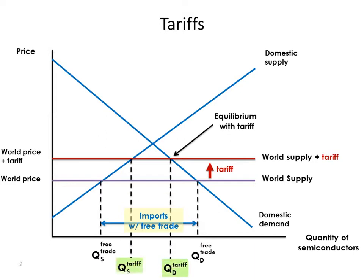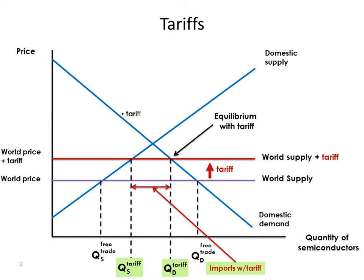If we now add on a tariff — that's a tax — which shifts the world supply curve up, the new equilibrium is here. We have less demanded because the price is higher, domestic production increases, so our quantity of imports falls. And our tariff revenues, that's simply the tariff rate times the quantity of imports, gives us the tariff revenues which go to the government.